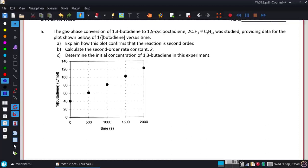Okay, we're looking at number five here. The gas phase conversion of 1,3-butadiene to 1,5-cyclooctadiene was studied providing the data for the plot shown below. We're plotting the inverse of the concentration of butadiene versus time. And we want to explain how this confirms that that reaction is second order in part A.